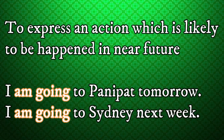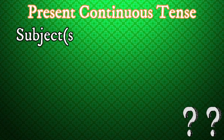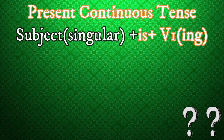The third use is to express an action which is likely to happen in the near future — to describe events about to occur soon. For example: I am going to Panipat tomorrow. I am going to Sydney next week. How to recognize present continuous tense?